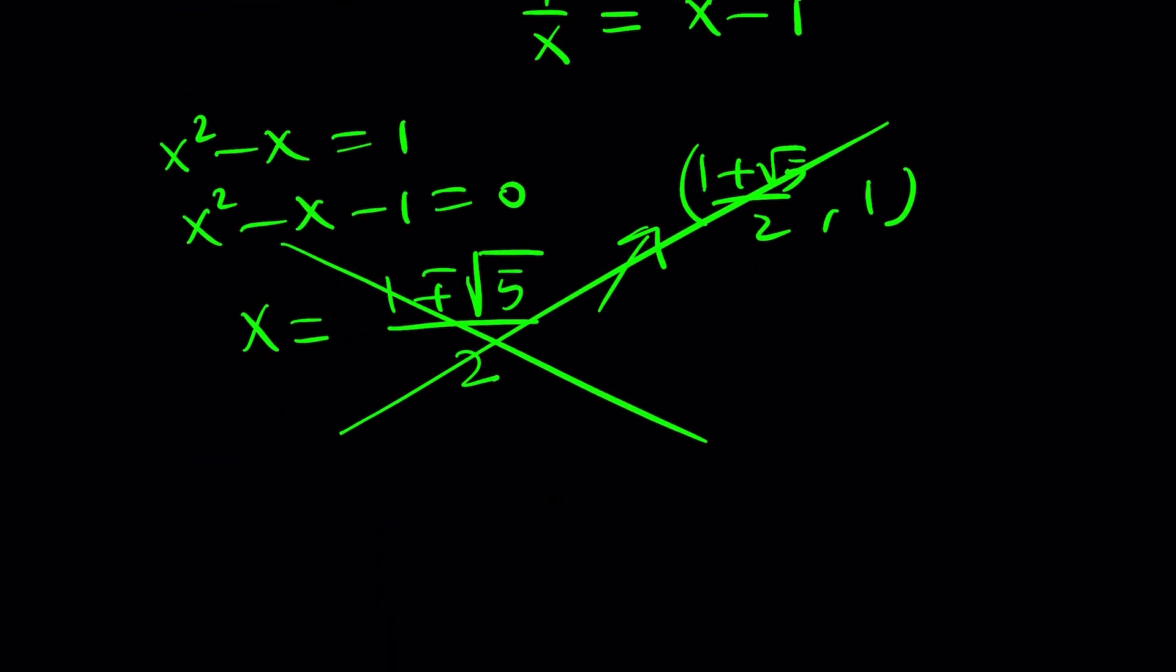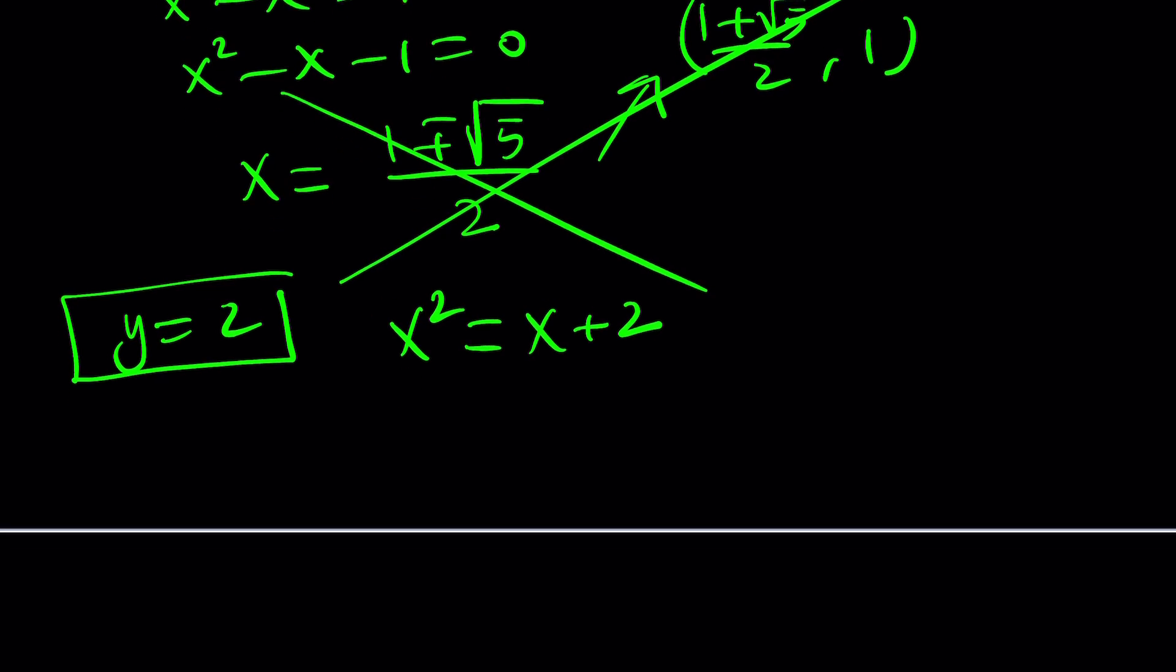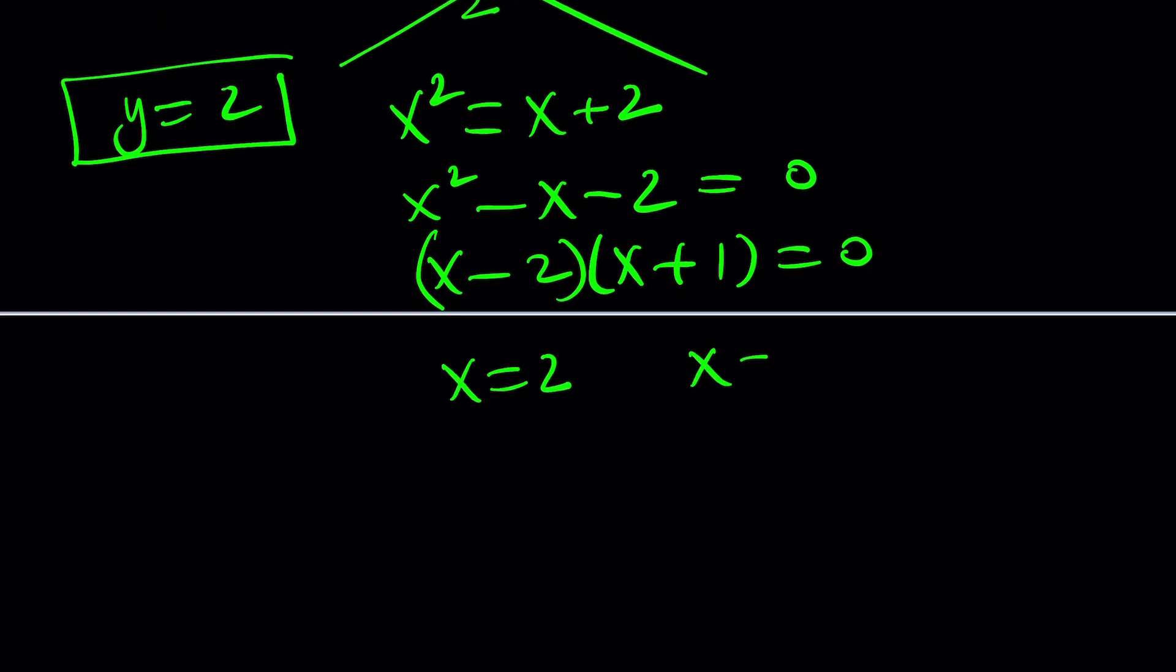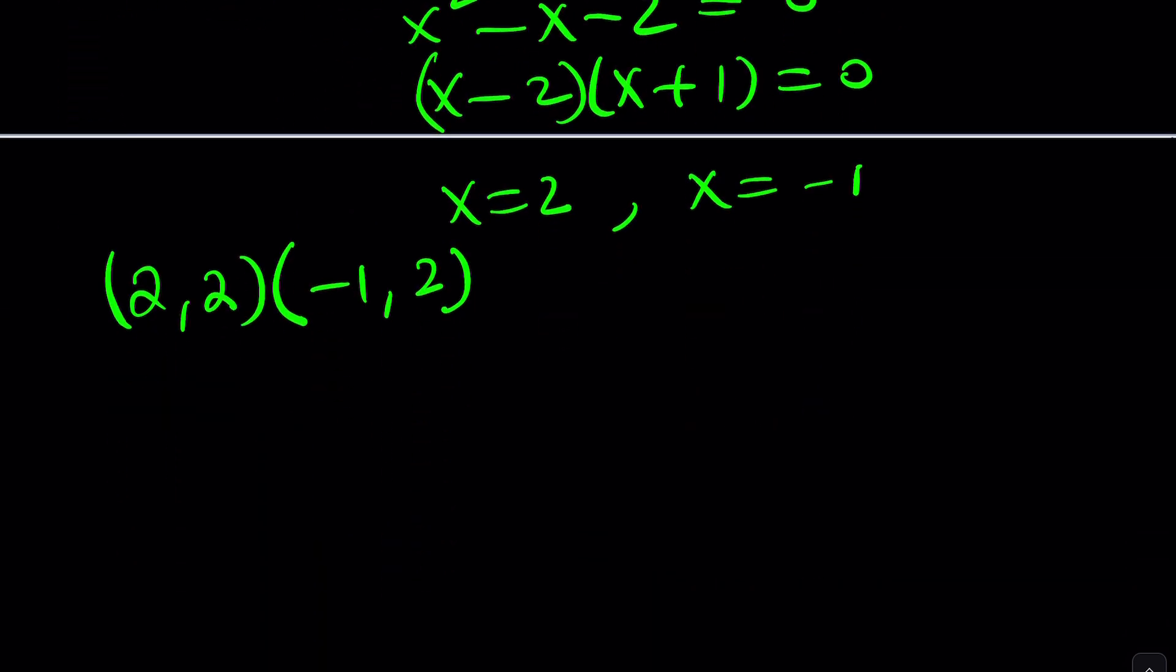The next thing I'm going to do is try y equals 2. y equals 2 becomes x squared equals x plus 2. It gave us a quadratic instead, which is nice. x squared minus x minus 2 equals 0. We can factor it as x minus 2 times x plus 1 equals 0. This gives us two solutions, x equals 2 or x equals negative 1. Along with y equals 2, this gives us 2 comma 2 and negative 1 comma 2 as ordered pairs. Since we already had 1 comma 0, we can bring it over here. So far, we got three solutions.